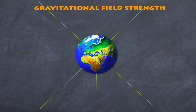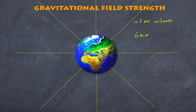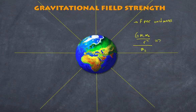So now we can come to a definition of gravitational field strength. The definition of gravitational field strength is simply determined by the force per unit mass. The force we know is equal to G m1 m2 over r squared — that is the force that exists between any two objects — and then we divide it by the mass that we have in that field, which is m2, and so that becomes G times m (the mass creating the gravitational field) divided by r squared.